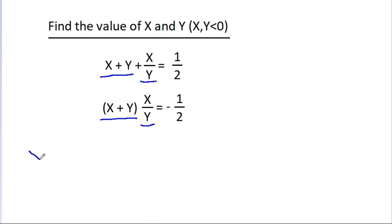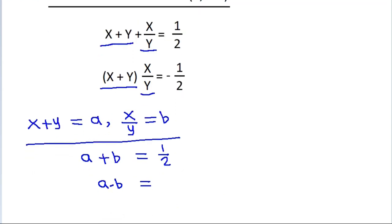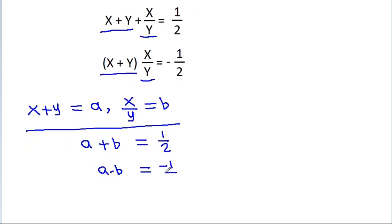Suppose x plus y is equal to a, and x by y is equal to b. Then equation 1 will become a plus b is equal to 1 by 2, and equation 2 will become a times b is equal to minus 1 by 2.